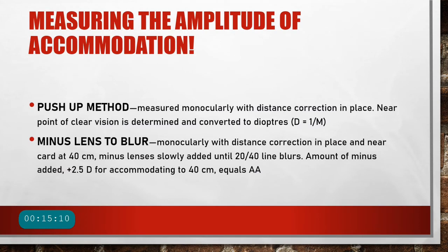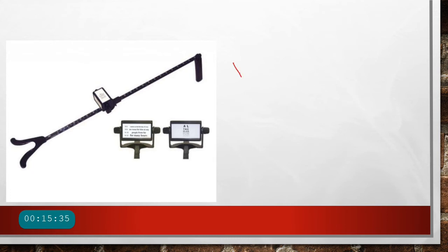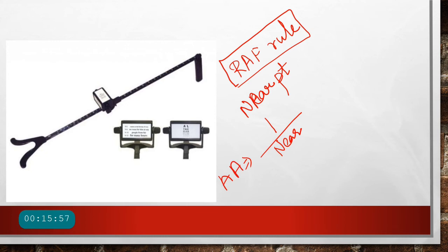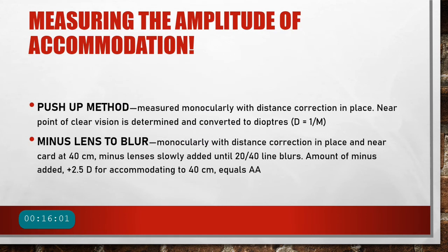To actually measure the amplitude of accommodation, two methods are used: the push-up method and the minus lens to blur method. The push-up method measures monocularly with distance correction in place; the near point of clear vision is determined using the RAF rule (Royal Air Force ruler) and converted to diopters by dividing 1 by the near point distance in meters. In this method the target is moved toward the patient's nose.